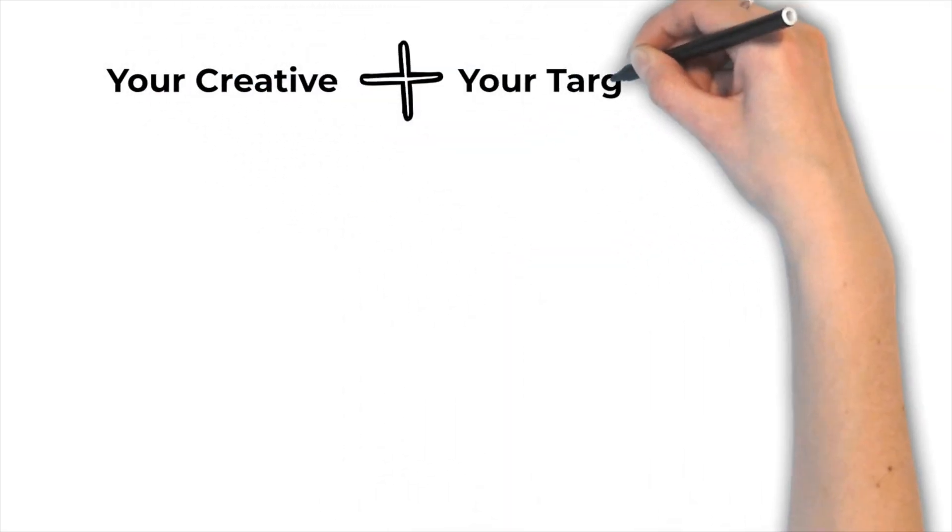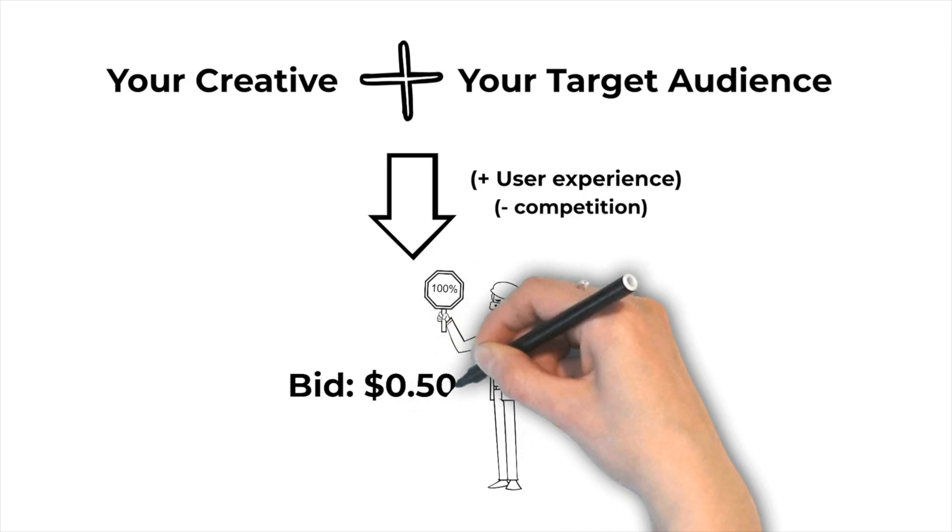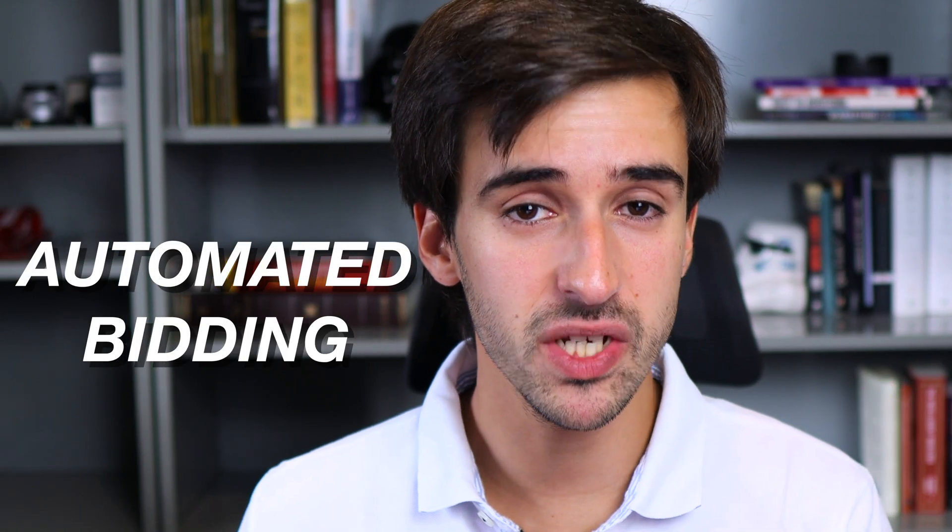Before we get into that, let's make sure we understand what the bid means. Facebook Ads is a bidding platform, which means every advertiser competes in an auction to show their ads to their audience, and the winner gets to show the ad to the person in that target audience. You can either select a bid yourself using a manual bidding strategy, or let Facebook do the bidding using an automatic bidding strategy. If you let Facebook do the bidding, it will take your creative and target audience and come up with a bid the algorithm thinks will get you your desired results for the best possible cost — this is Facebook's automated bidding system.